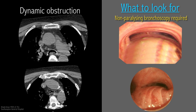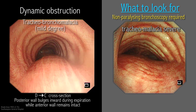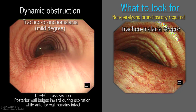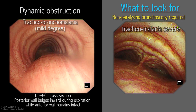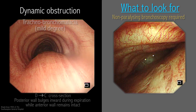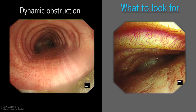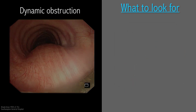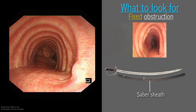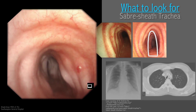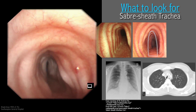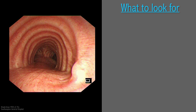Obstruction of the main trachea is either static or dynamic. In the abnormal condition of tracheobronchomalacia, the C-shaped cartilages are weak or destroyed, leading to flattening of the trachea in its transverse axis, especially during coughing — the D-shaped cross-section becomes a C-shape. In milder degrees, the membranous wall is seen to bulge inwards during expiration while the anterior wall remains intact. A non-paralyzing anaesthesia is required to diagnose dynamic obstruction. Saber-sheath trachea is characterised by diffuse lateral narrowing with concomitant increase of its anteroposterior diameter; chronic obstructive pulmonary disease is the main aetiology. When ossification of the tracheal rings takes place, the dynamic obstruction becomes a fixed one.